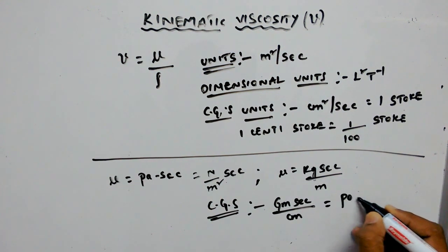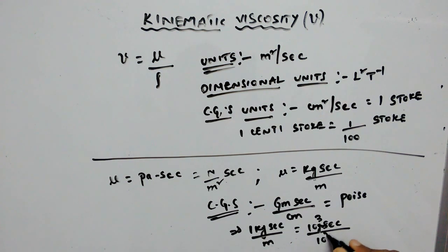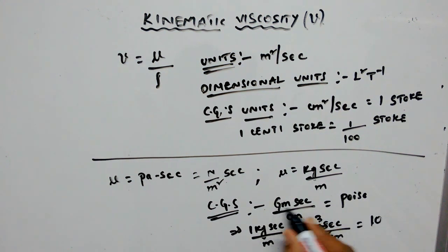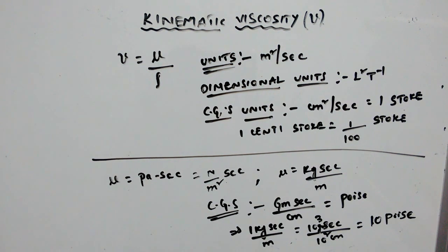as one poise. So one kilogram second per meter can be written as 10³ grams second per... meter is 10² centimeters, which means you can write 10 grams second per centimeter, which equals 10 poise. So 1 kilogram...